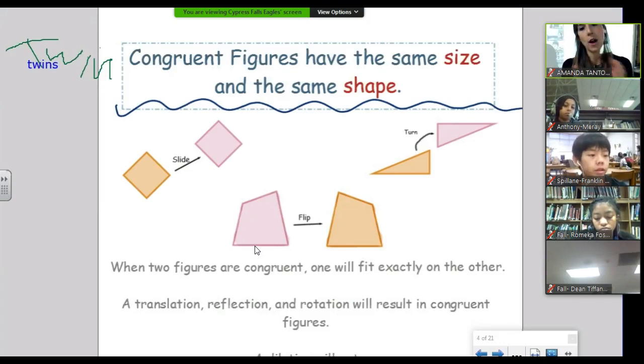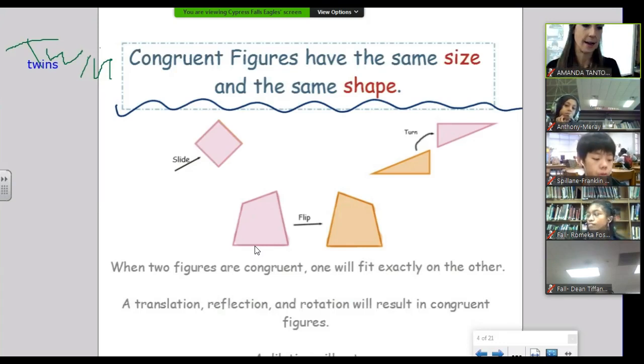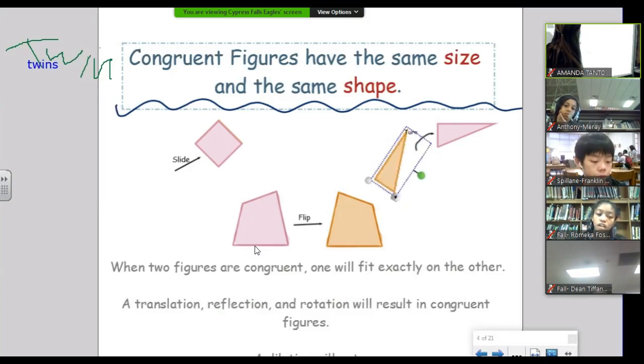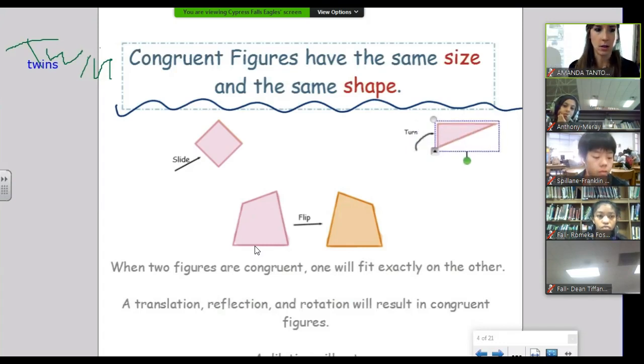So, those two quadrilaterals, they are congruent if I can translate this one and it lands perfectly, maps perfectly onto the other one. So, that was a translation, that was a slide. These two are congruent if I can rotate this guy and it perfectly matches up with the other triangle. That's how you define that they are congruent.